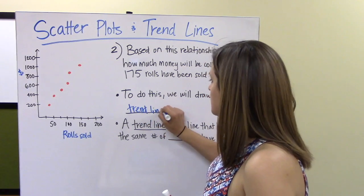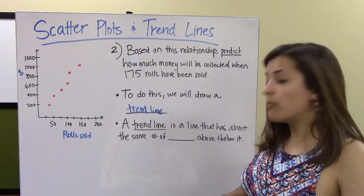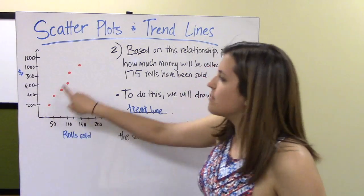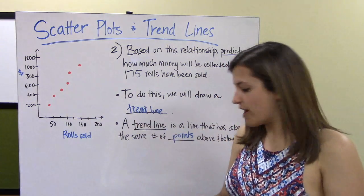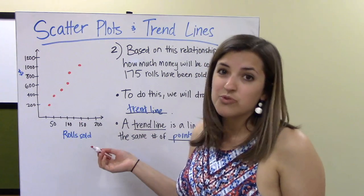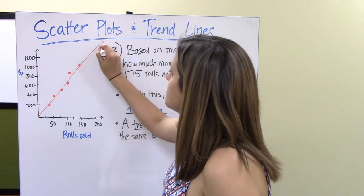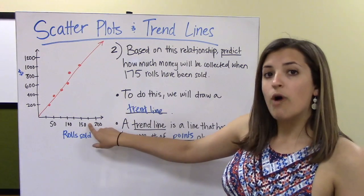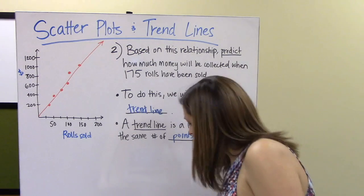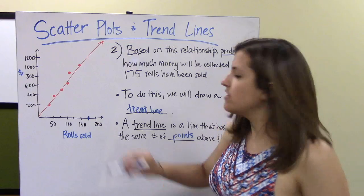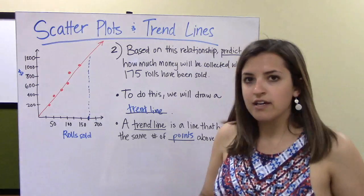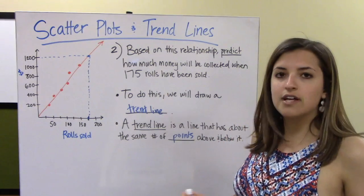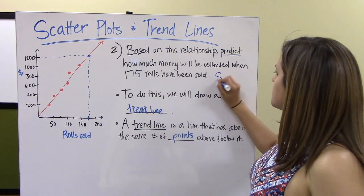A trend line is a line that has roughly the same number of data points above and below it — it best fits the points on the graph. We draw a straight line through the points, using a ruler if possible. This line tells us the general trend of where the graph is going. To predict at 175 rolls, we locate 175 on the x-axis, go up to the trend line, and read the y-value, which is 1,200. So using our trend line, we predict that after selling 175 rolls, we will have raised $1,200.